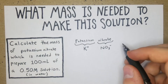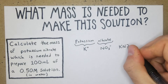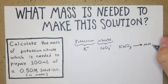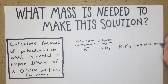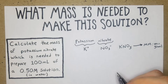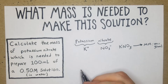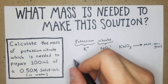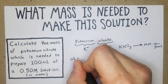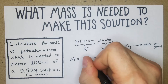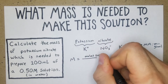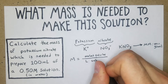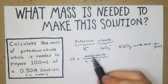Since it's a +1 and a -1, we just put them next to each other and get KNO₃. The molar mass of KNO₃ is 101.1 grams per mole. Now we use the molarity equation: molarity equals moles of solute — in this case potassium nitrate — per liters of solution.